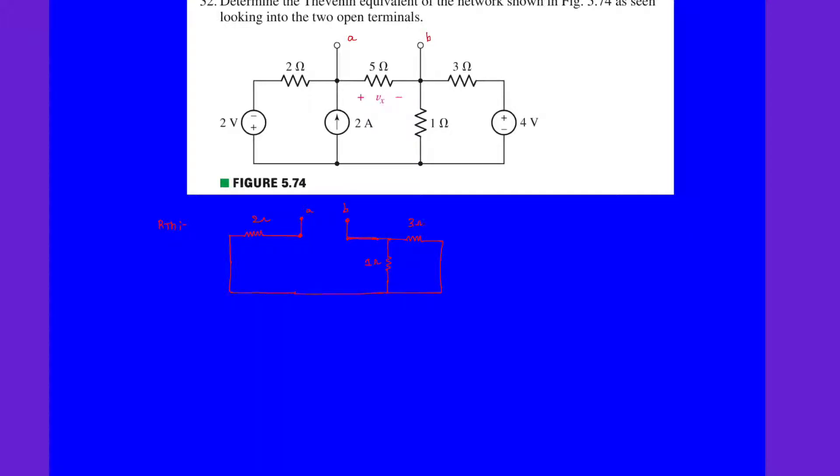This is the 3 ohm resistor, and this is the 5 ohm resistor. Clearly, this 3 ohm resistor and this 1 ohm resistor are in parallel. So the parallel resistance is 1 multiplied with 3 over 3 plus 1, that is nothing but 0.75 ohms.